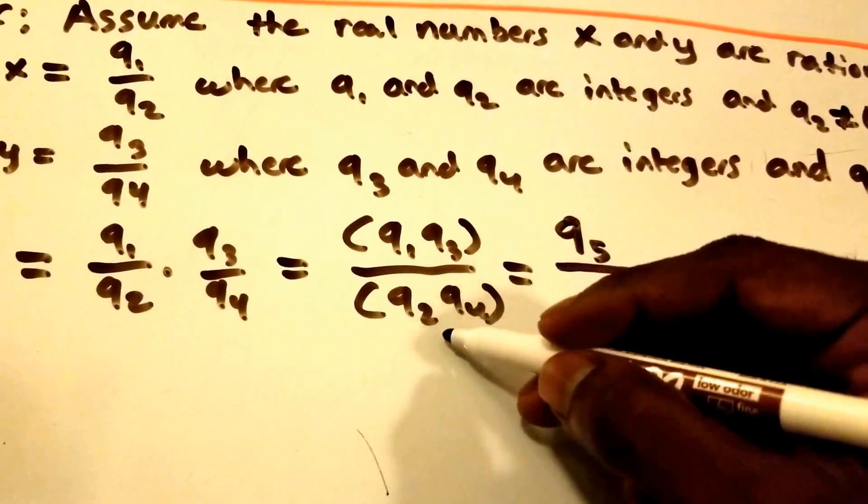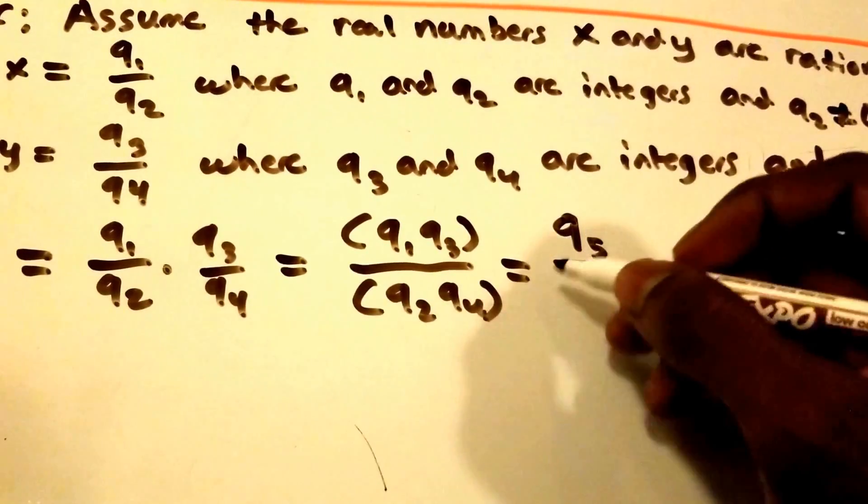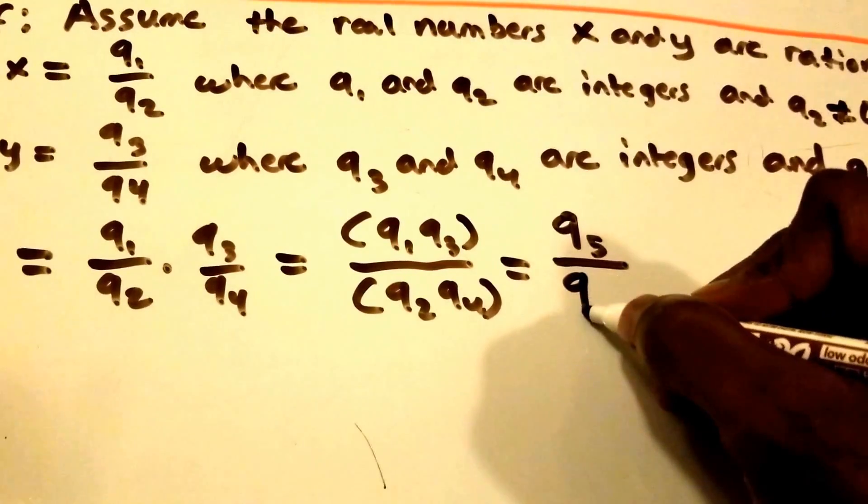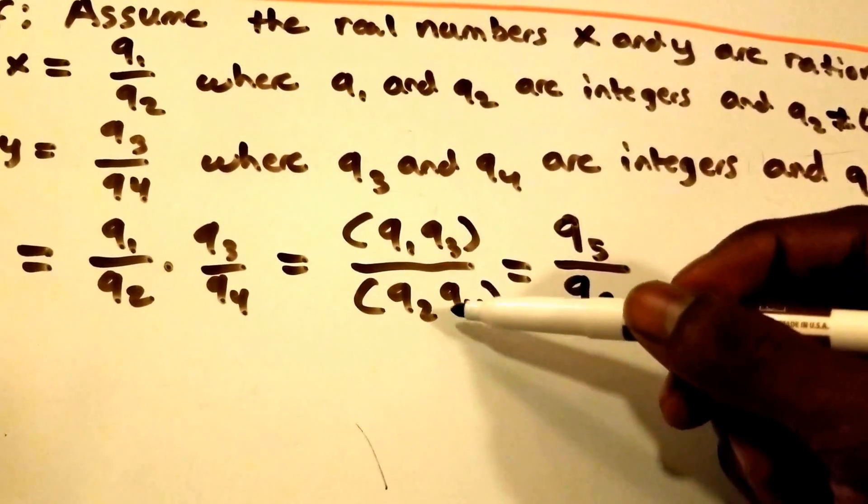And so q2 times q4 will equal some other integer value that we're going to call q6, and we know that this is an integer value because we said that q2 and q4 are integers.